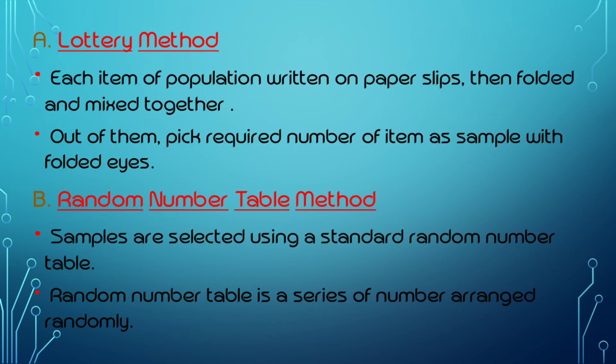What is the lottery method? In the lottery method, each item of the population is written on paper slips, then folded and mixed together. Out of them, pick the required number of items assembled with folded eyes.